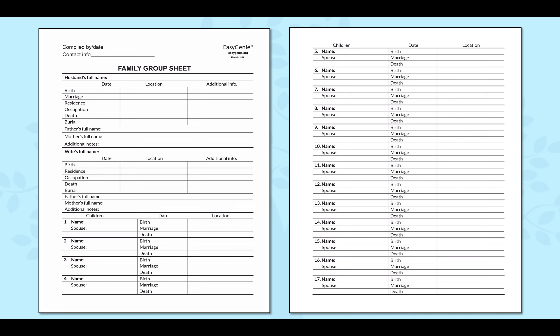It's a large print family group sheet, and you can see that there's two sides to it. It's basically based around a family — you have the husband, the wife, children, parents, spouses, and lots of information about each one of those persons. On a single-sided family group sheet, which you might download from the internet, you might be able to get one with eight children. But the ones that we publish: the large print one has 17 children, and the normal-sized one has 24 children.